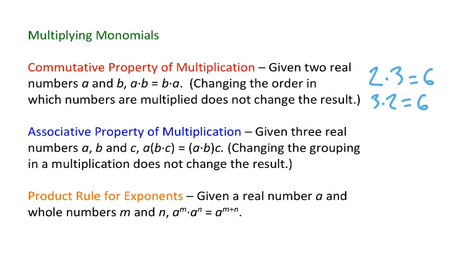Another property from basic mathematics is called the associative property of multiplication. Given three real numbers a, b, and c, a times the quantity b times c is equal to the quantity a times b times c. This rule says changing the grouping in a multiplication does not change the result.